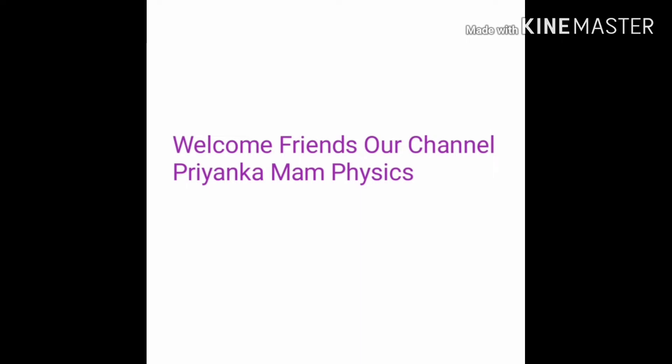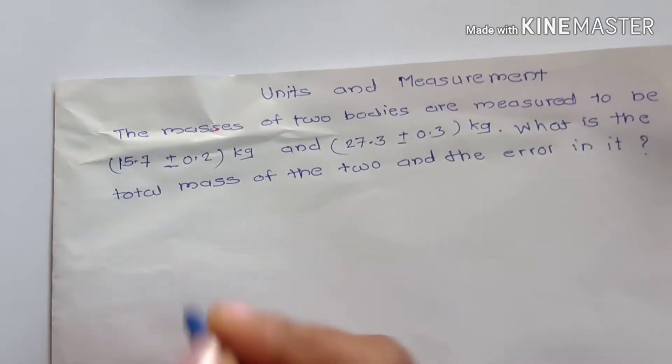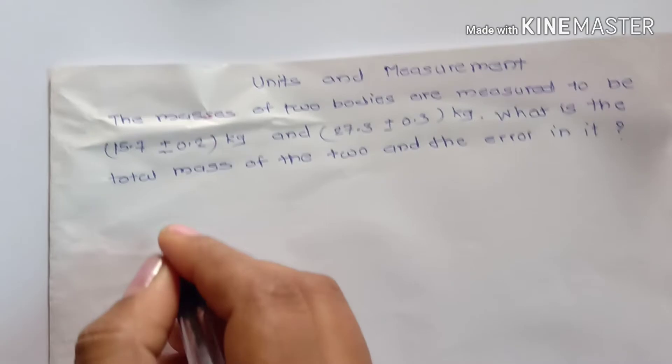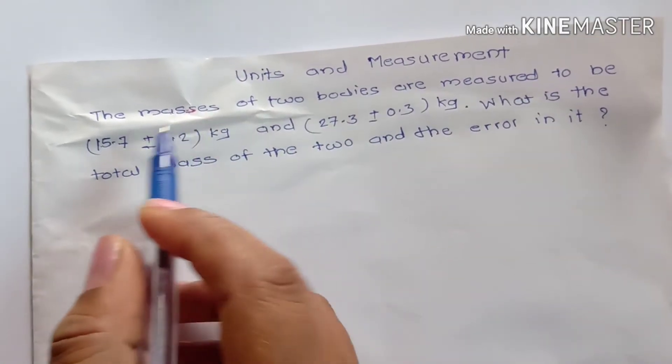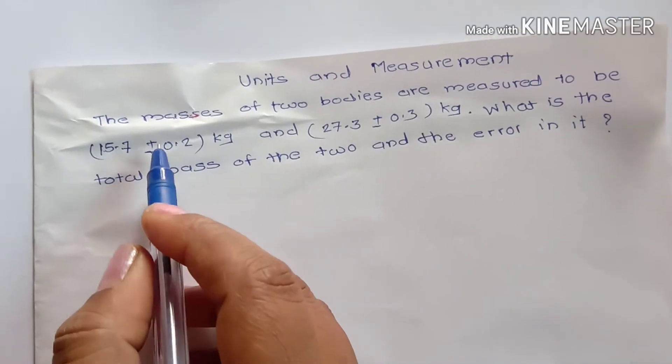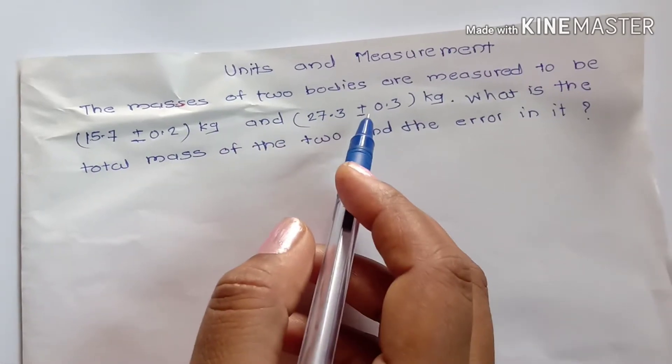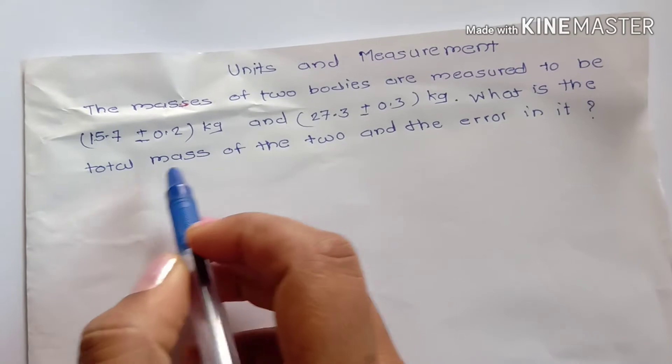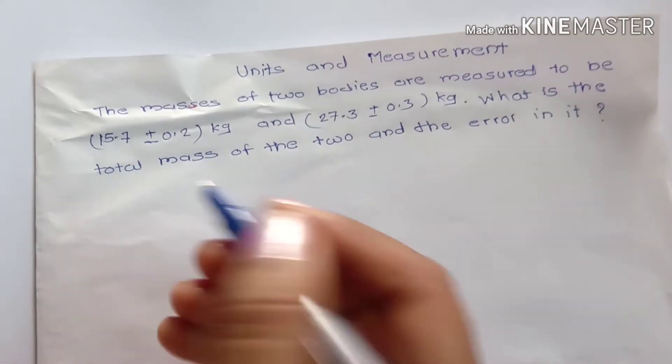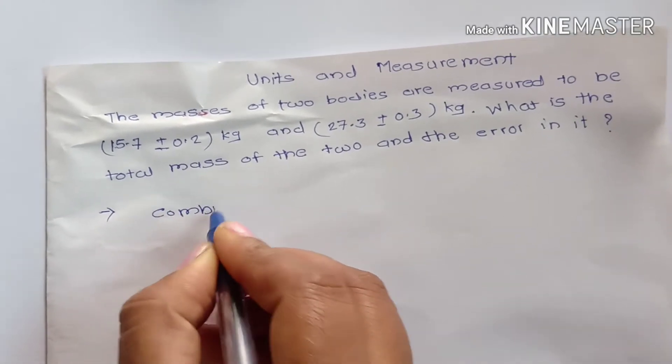Hello friends, welcome to our channel Priyanka ma'am physics. Please like and subscribe our channel. Next example: units and measurement. The masses of two bodies are measured to be 15.7 plus minus 0.2 kg and 27.3 plus minus 0.3 kg. What is the total mass of two and the error in it? Let's start to solve this example now.